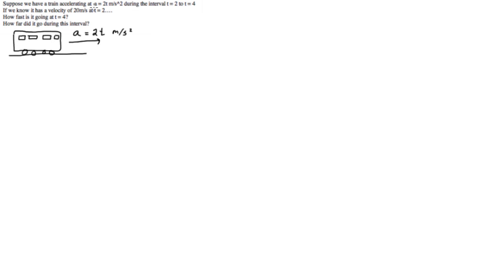Suppose we have a train accelerating with an acceleration of 2t meters per second squared during the time from t equals 2 to t equals 4. We know at the beginning of this interval, at t equals 2, it has a velocity of 20 meters per second. We want to find out how fast is it going at t equals 4, and how far did it go during this 2 second interval.